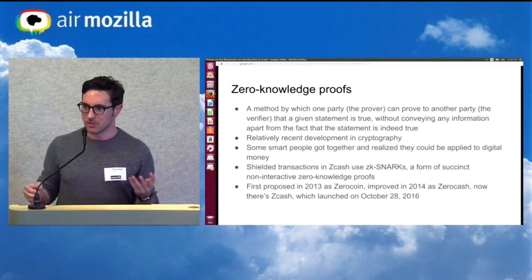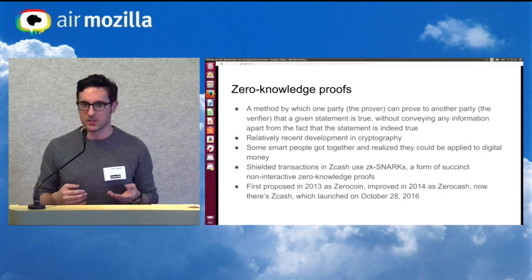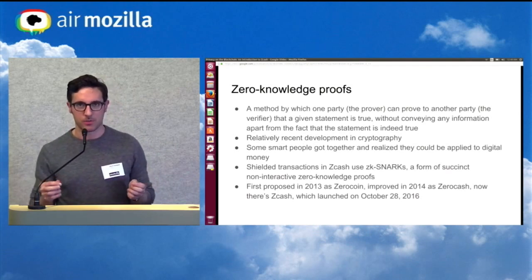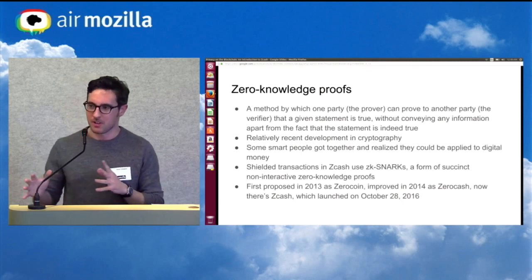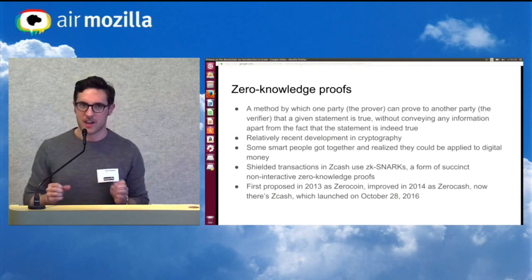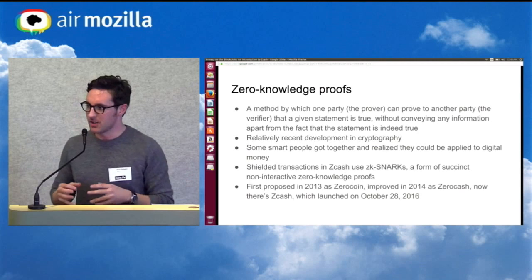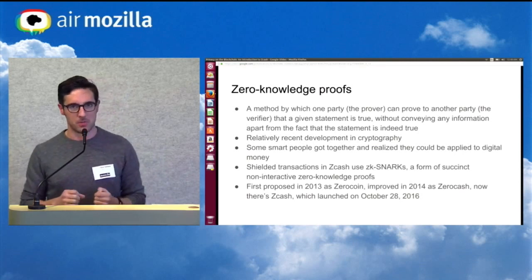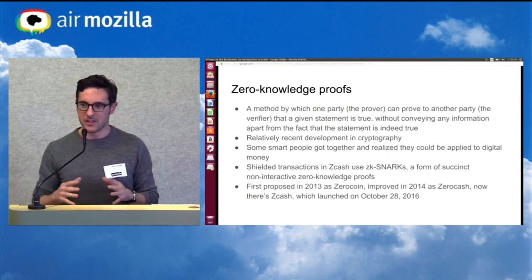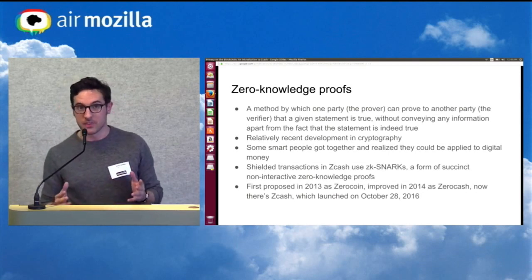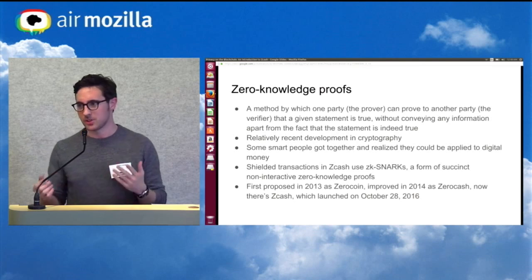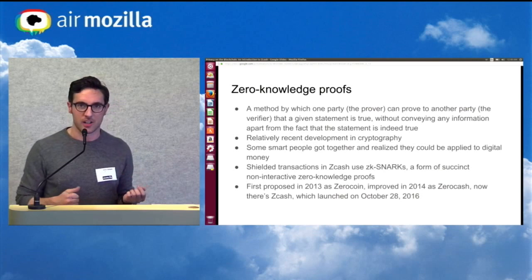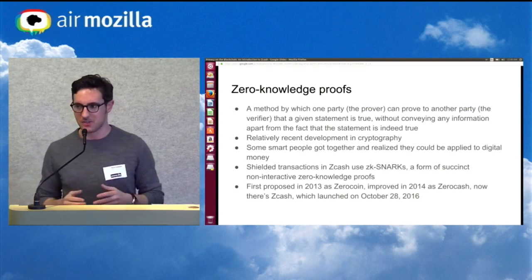In cryptography, there's a relatively recent novel development called zero-knowledge proofs. It's a method by which one party — the prover — can prove to another party that a given statement is true without conveying any information apart from the fact that the statement is true. The underlying science to the Zcash protocol is only three or four years old. Some smart people got together and realized you could apply this to digital money. The actual term for the type of zero-knowledge proof used in Zcash is called a ZK-SNARK — a succinct, non-interactive zero-knowledge proof.